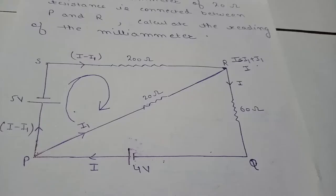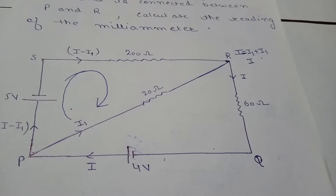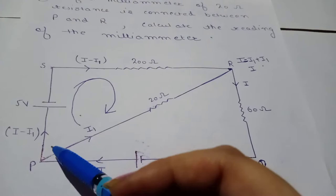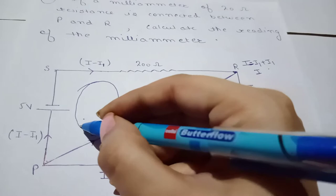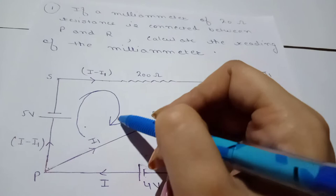Now we have assigned the currents. The next step is to consider a loop. We will consider a clockwise loop P, R, Q, P for applying Kirchhoff's voltage law.